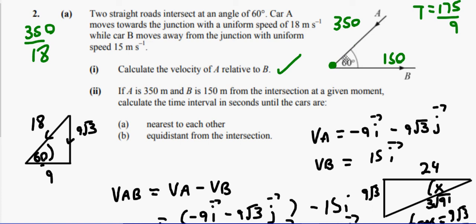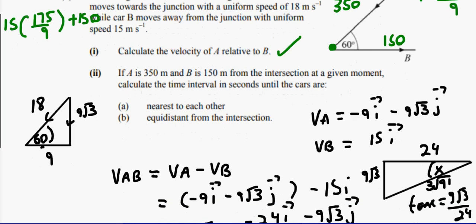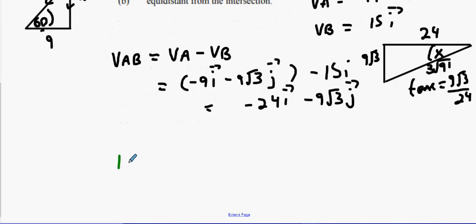In that time, how far has B travelled? 175 over 9 times 15, plus the original 150 you're away from the junction. So put that all into your calculator. And it's going to be a good old fashioned math number of 1325 over 3.